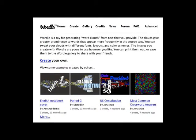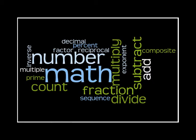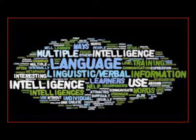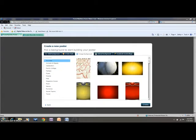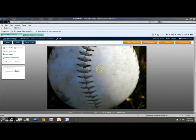Another product will be creating a Wordle on Wordle.net. Students will design and construct their own Wordle using math vocabulary that they will learn throughout the unit. This product meets the creating level of Bloom's Taxonomy. This also addresses visual, verbal, and kinesthetic intelligences. Students will also create a math poster online at postermywall.com.